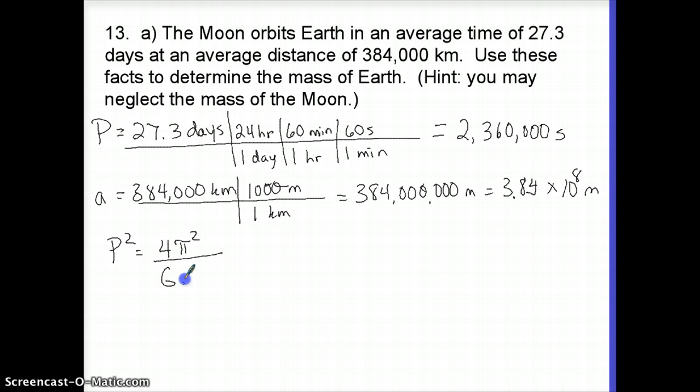Again, I'm going to ignore the mass of the moon, because the mass of the moon is much less than the mass of the earth. And we're going to plug in. This gets kind of hideous now. So I've got 236,000 squared, 4 pi squared, over G times M1 times 3.84 times 10 to the 8th cubed. Okay. So I'll start with 236,000. I'm sorry, I keep missing a zero here. 2,360,000 squared.